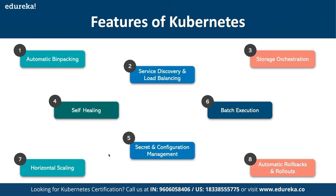Kubernetes has multiple features: automatic scheduling, self-healing capabilities, automated rollouts and rollbacks, horizontal scaling, and load balancing. For scheduling, Kubernetes provides an advanced scheduler to launch containers on cluster nodes based on their resource requirements and other constraints while not sacrificing availability.